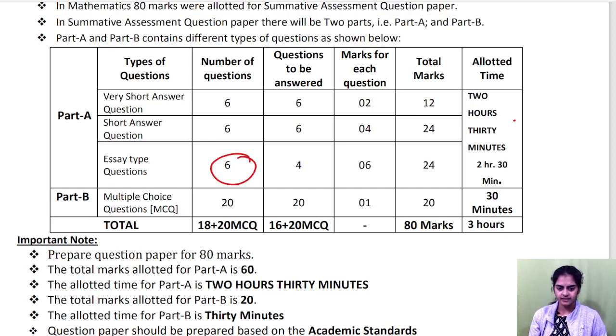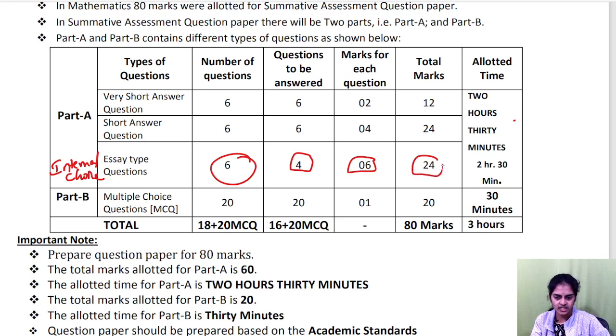In the last paper which was released there was internal choice. But now they said 6 questions they will give you, you should write only 4. So choice is not internal. You can choose any 4 out of 6, and each question carries 6 marks. So 4 times 6 is 24 marks you will get. And short answers, earlier it was only 3 marks each question. Now they gave it for 4 marks. This is the basic change.